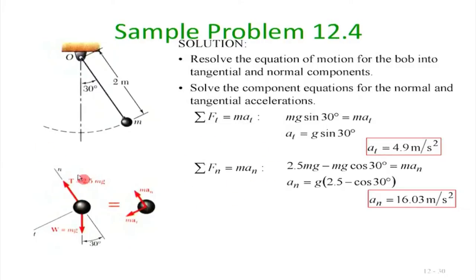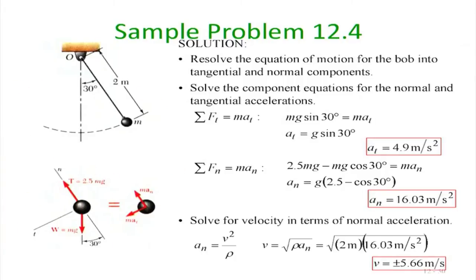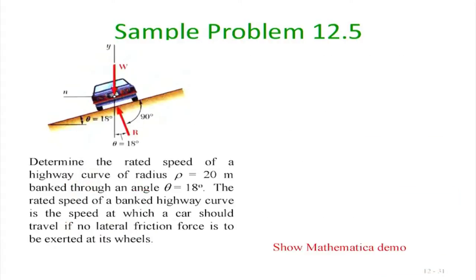The normal force equation gives: 2.5mg - mg·cos30° = m·an. From that we find an, and since an = v²/ρ with ρ = 2 m, we immediately find the speed of the bob at that position. This is straightforward since the forces are given.